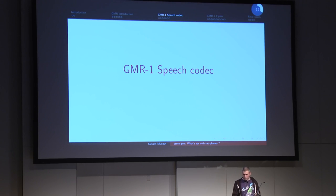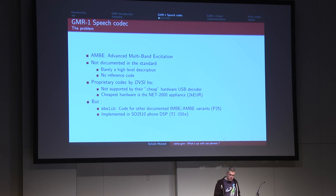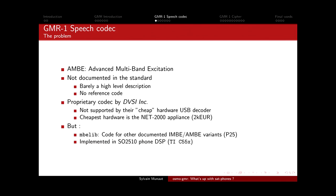The speech codec is called AMBE - Advanced Multi-Band Excitation. It's not a codec in itself; it's more a family of codecs - several versions named AMBE which are actually different from one another and not compatible. It's not documented in the GMR standard, which is really annoying. There is a bit of specification in there but it only gives a high-level description - like the codec takes audio as input and produces 80 bits of output every 20 milliseconds - but nothing sufficient to implement a decoder.